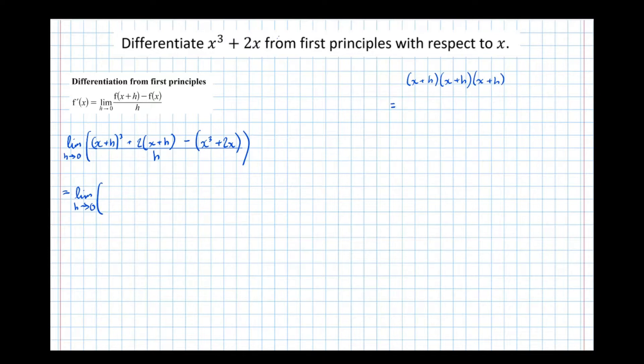So taking the first pair of brackets, I get x squared plus 2xh plus h squared, times x plus h, which is equal to x cubed, plus x squared h plus 2x squared h.